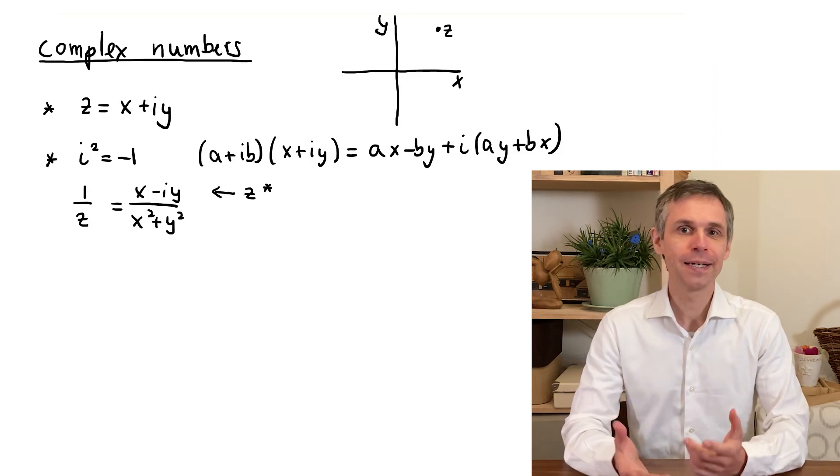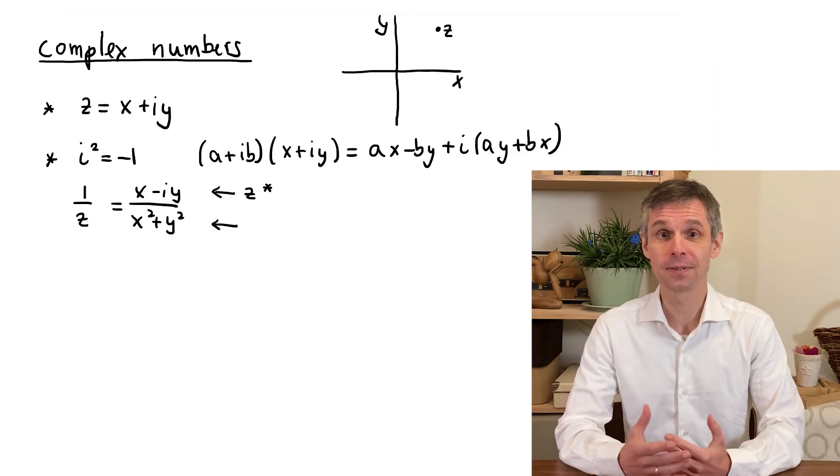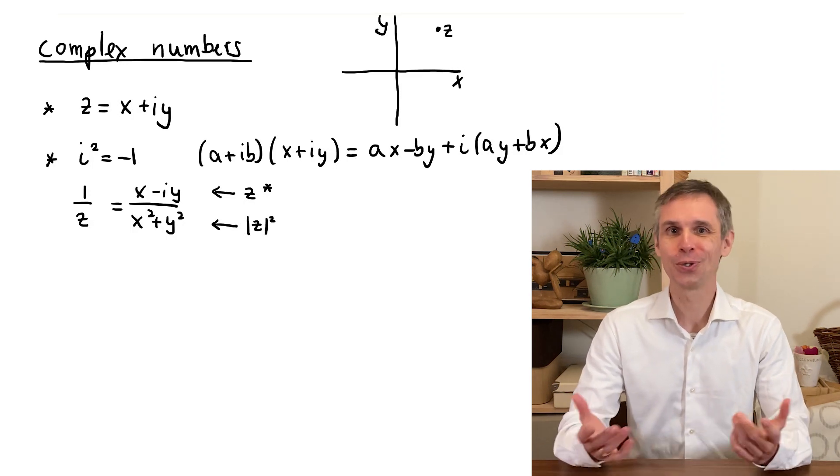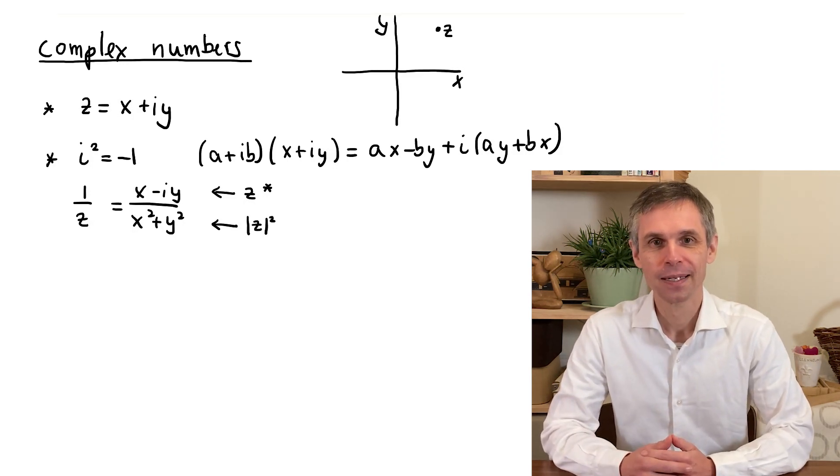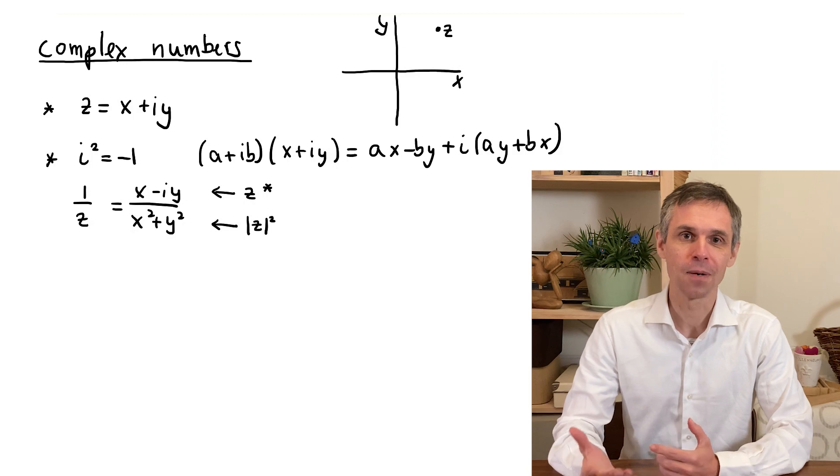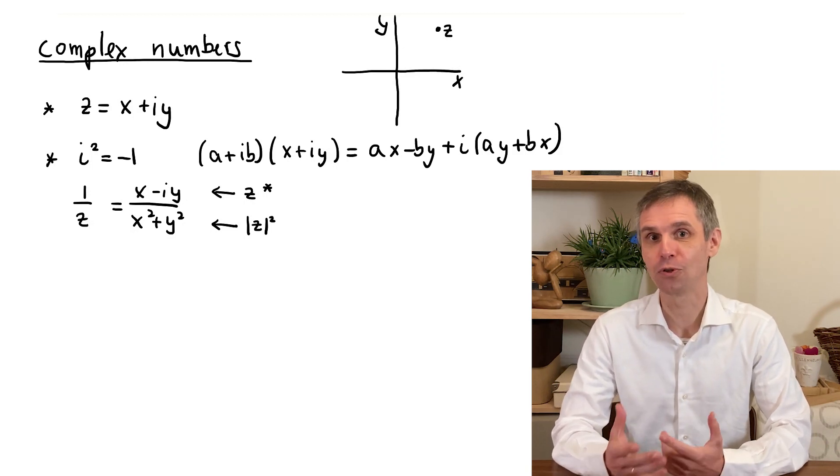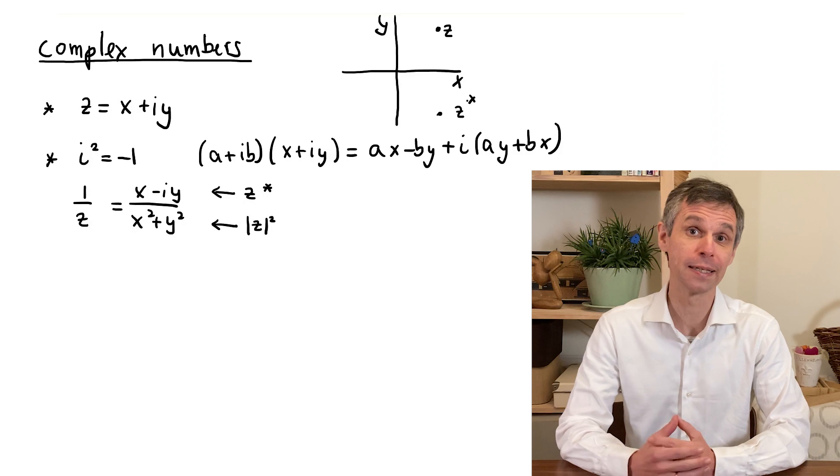In the denominator, you find the square of the length of the number in the complex plane, which we call the absolute value. In the complex plane, the complex conjugated number is found by a simple reflection with respect to the real axis.